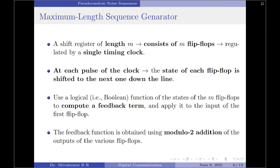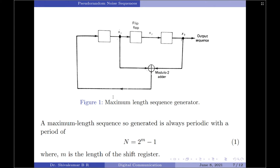In order to prevent the shift register from emptying by the end of m clock pulses, we use a logical or boolean function of states of the m flip-flops to compute a feedback term and apply it to the input of the first flip-flop. In a feedback shift register of the linear type, the feedback function is obtained using a modulo-2 addition of the outputs of the various flip-flops. This operation is illustrated in Figure 1 for the case where m equals 3, representing the states of the three flip-flops as x1, x2, and x3 respectively.